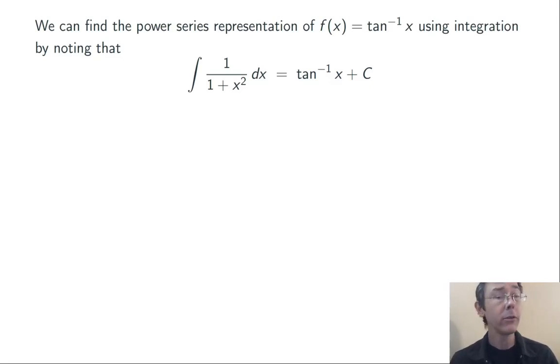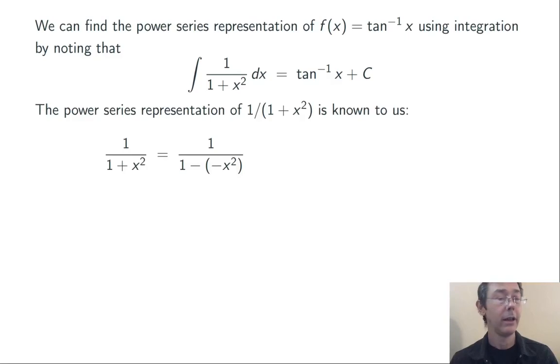We can get a power series for 1 over 1 plus x squared just by writing it as 1 over 1 minus negative x squared. And then taking that negative x squared and plugging it into the formula for the power series of 1 over 1 minus x.